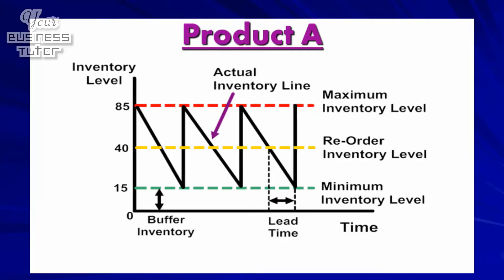This, as you have probably worked out, is the point at which stock should be ordered. And as the horizontal yellow line indicates, the reorder inventory level for Product A should therefore be set at 40 items, because this means stock will be delivered before a business breaches its minimum inventory point.